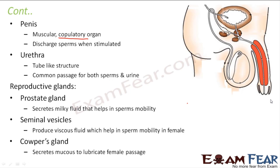The urethra is a tube-like structure and serves as the common passage for both sperms and urine. It originates from the urinary bladder, passes through the penis, and opens to the outside. It carries urine coming from the urinary bladder and also carries sperms coming from the vas deferens.